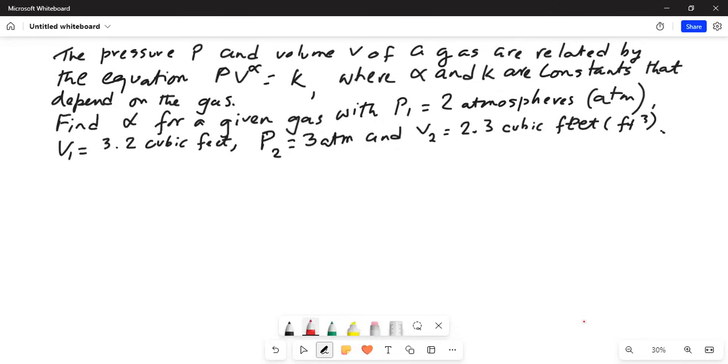Find alpha for a given gas with p1 equal to 2 atmospheres, v1 equal to 3.2 cubic feet, p2 equal to 3 atmospheres, and v2 equal to 2.3 cubic feet. 1 and 2 are the two different states of the same gas.